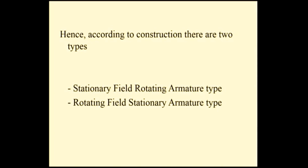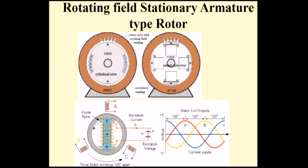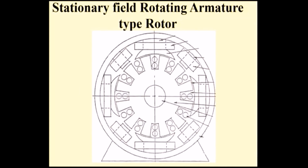According to construction, there are two types. The first arrangement is for rotating field and stationary armature — here the outer part is the armature, this is a four-pole system, the armature is stationary and the field is rotating. The inner periphery of the armature is made up of a number of slots, and in those slots we place the conductors. The second is stationary field rotating armature, where the field is stationary and the armature is rotating. So in an alternator we have two types: stationary field rotating armature and rotating field stationary armature.